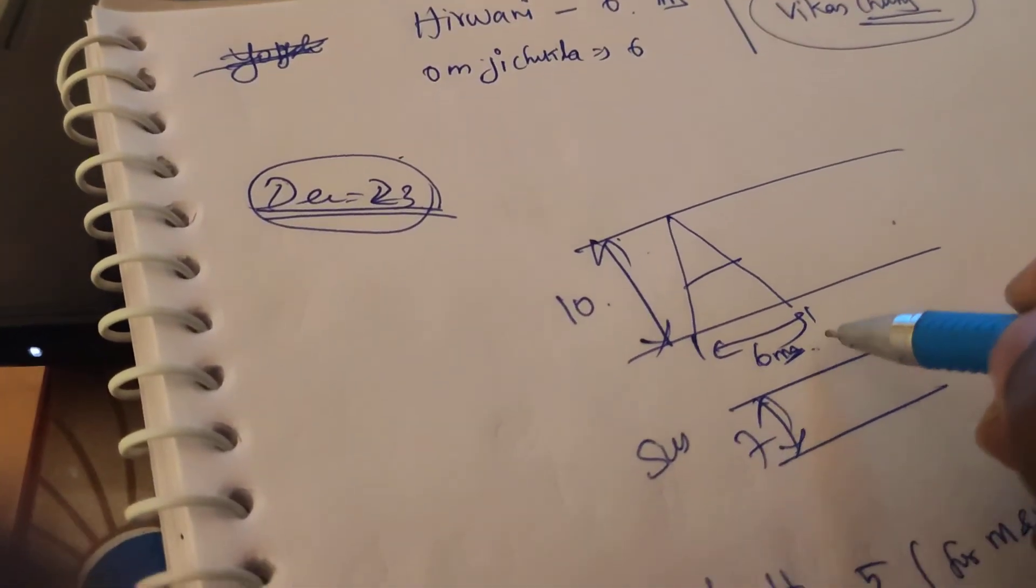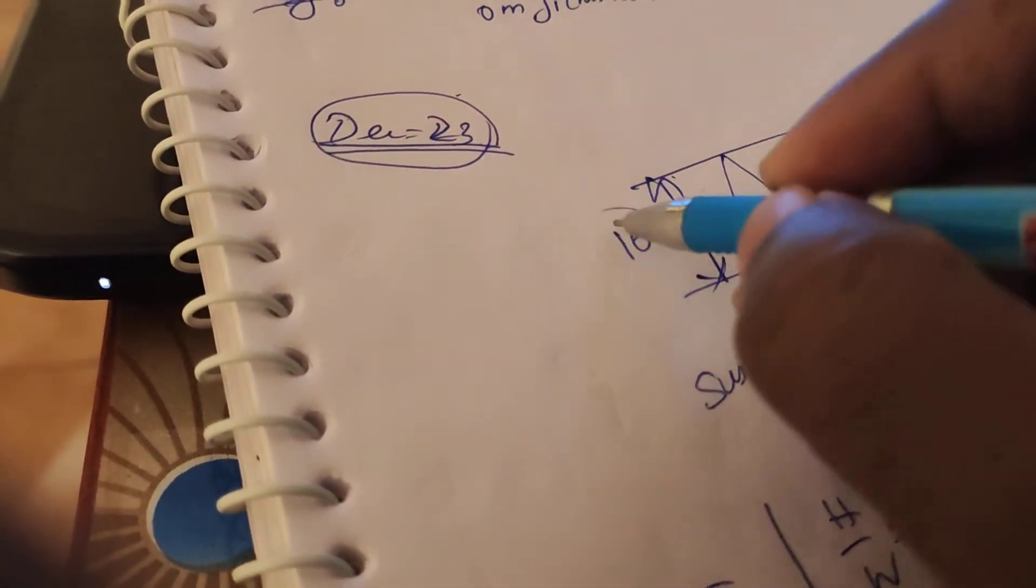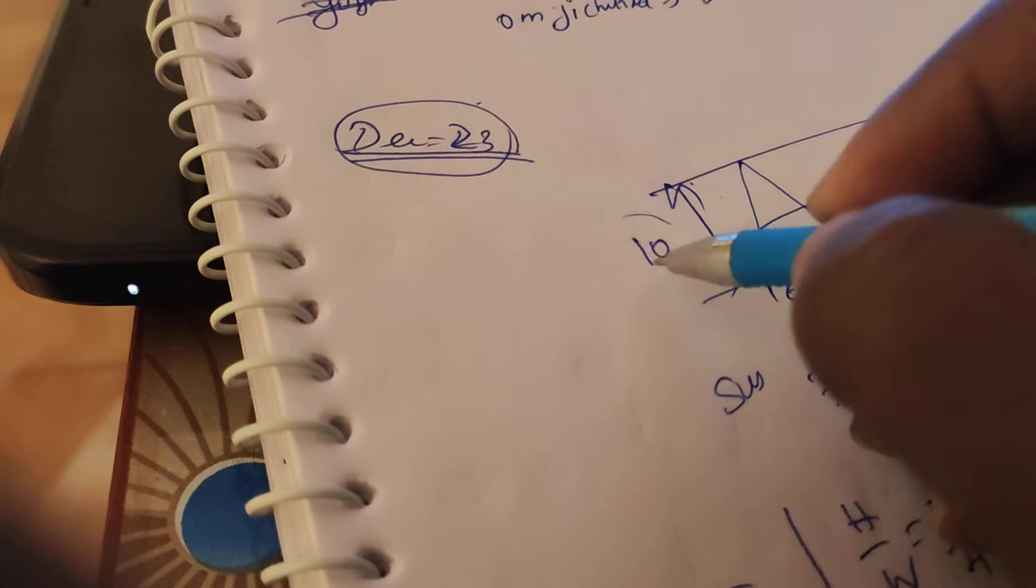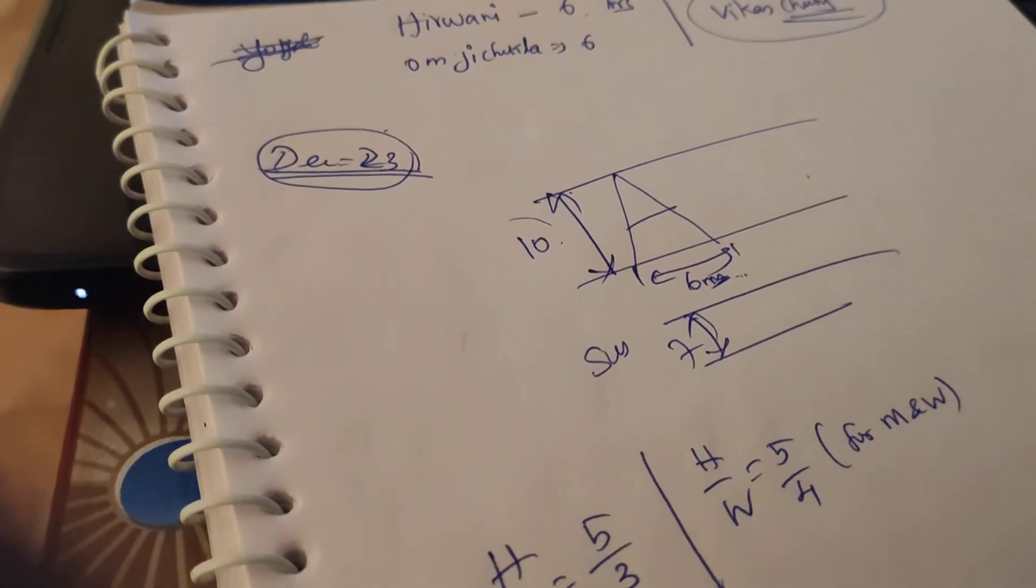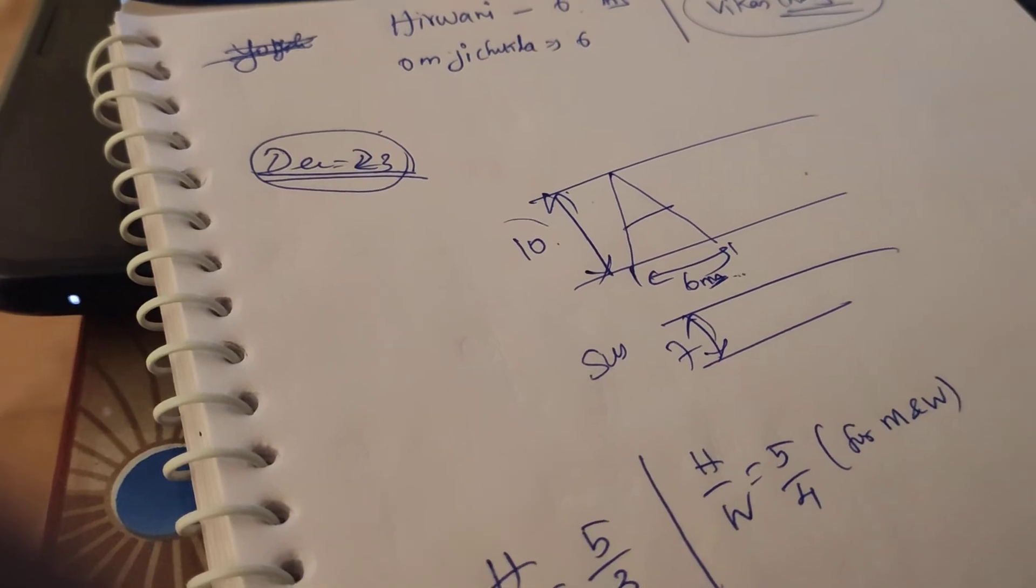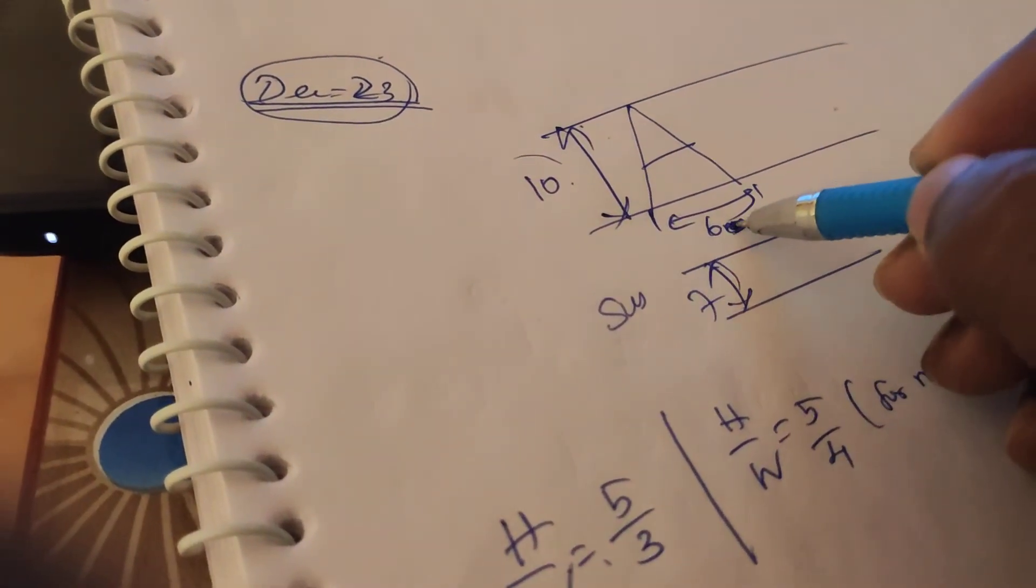So remember, in the engineering graphics, you should never put mm near the units, the numerical values, because all the dimensions are mm in engineering graphics in Indian method. So no need of putting this mm, just simply put 6.